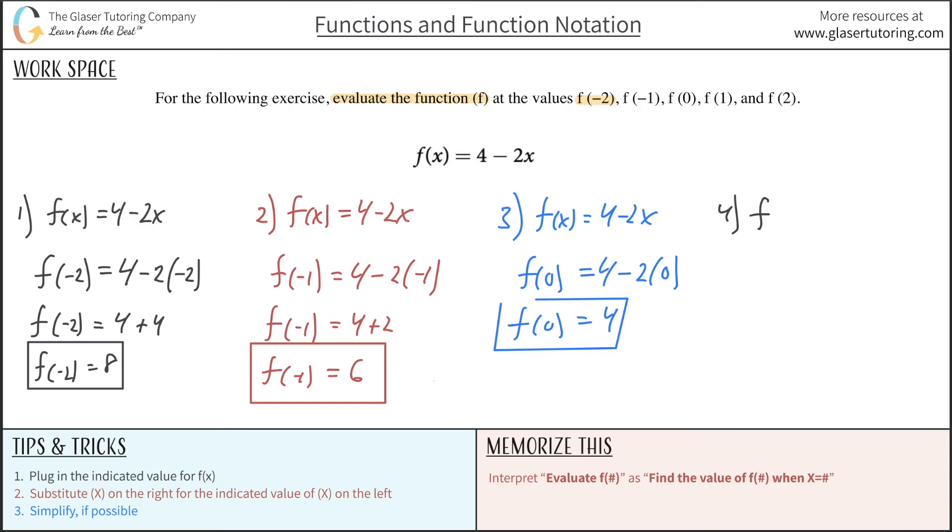All right, so we can say now that for the fourth one, f of 1 is going to simply be 2. Okay, and then for number 5, we would simply have f of 2 is now going to be equal to 0. And that's all, ladies and gentlemen.